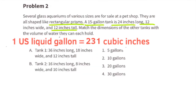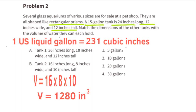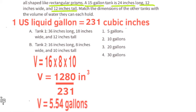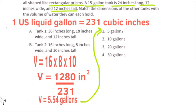Part B. Tank number 2: 16 inches long, 8 inches wide, and 10 inches tall. That's 16 times 8 times 10, giving a volume of 1,280 cubic inches. 1,280 divided by 231 is a little over 5.5 gallons. So I would select number 1, the 5 gallons.